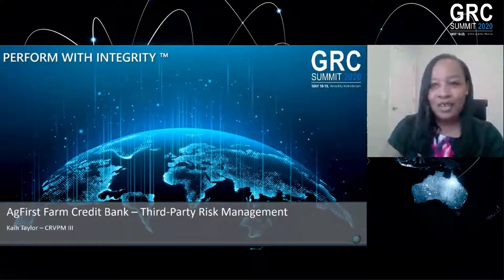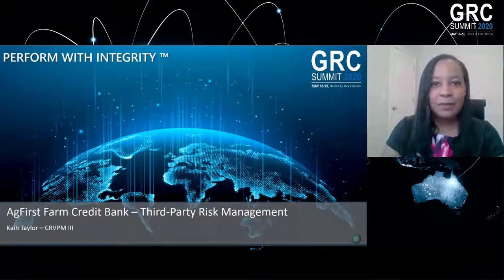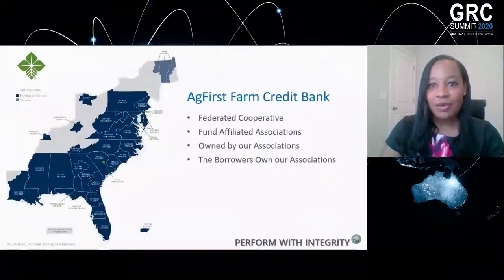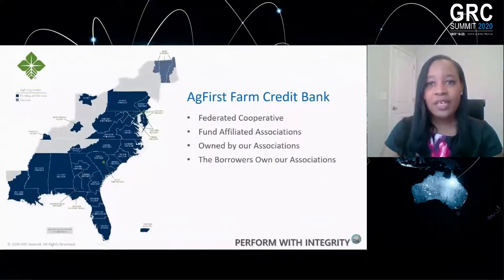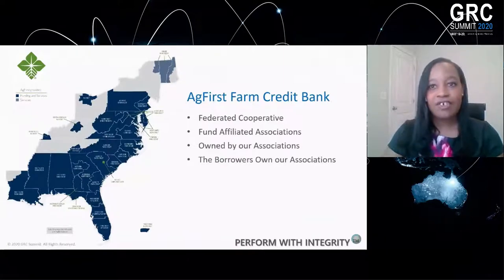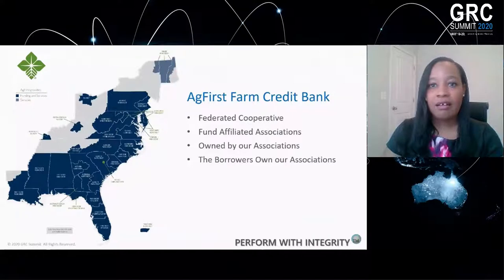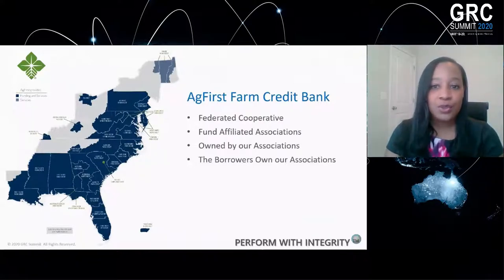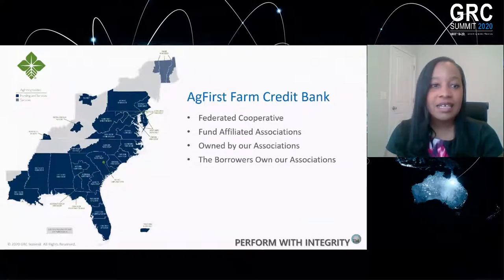I wanted to start off by giving you a little bit of background about who AgFIRST are. As an organization, we have a somewhat different setup in the sense that we are not a commercial bank. We are a federated cooperative, and we have 19 affiliated associations and provide services to 20 associations across 18 eastern states.